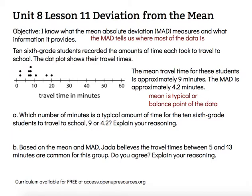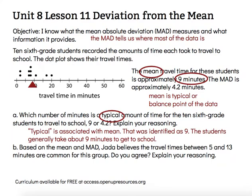Letter A says: Which number of minutes is a typical amount of time for the ten sixth grade students to travel to school — the nine minutes or four and two-tenths minutes? We see that key word "typical," and that tells us to look at the mean, or the average, or the balance point. That's already been identified for us as nine minutes.